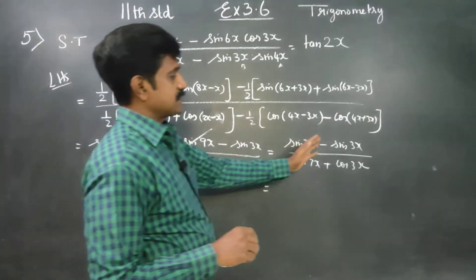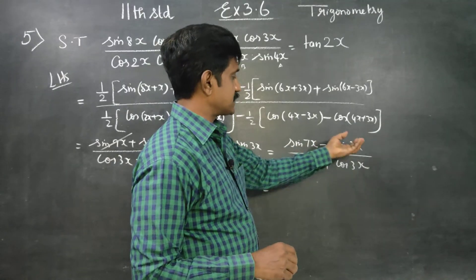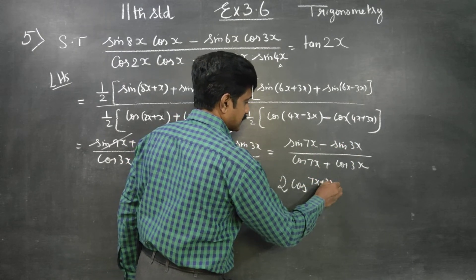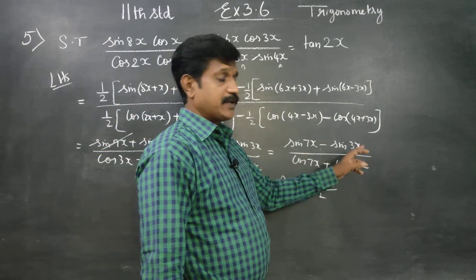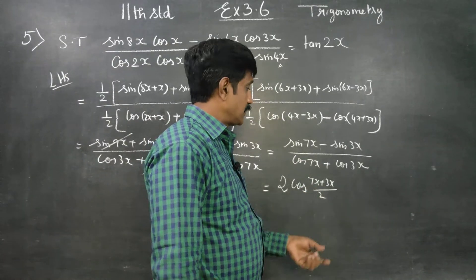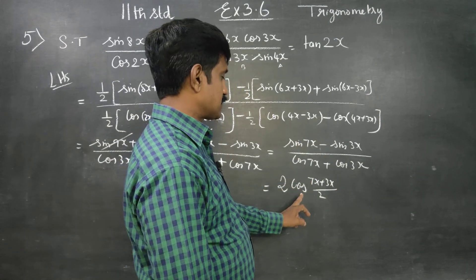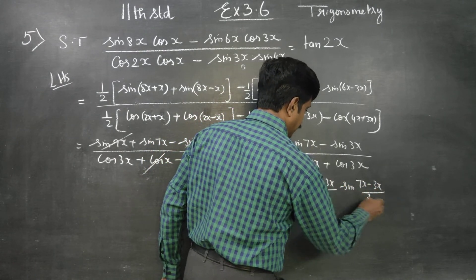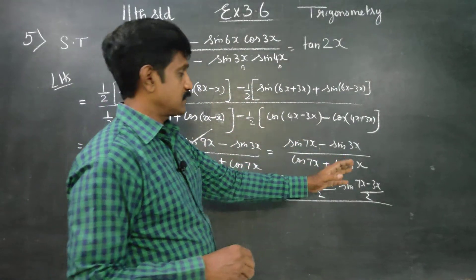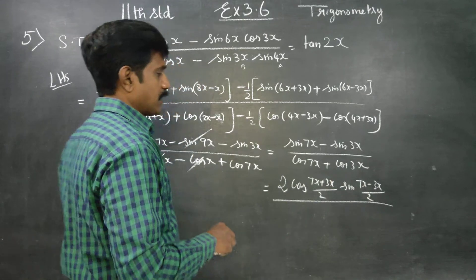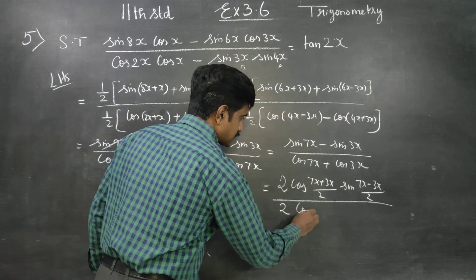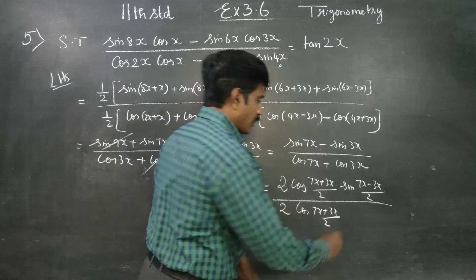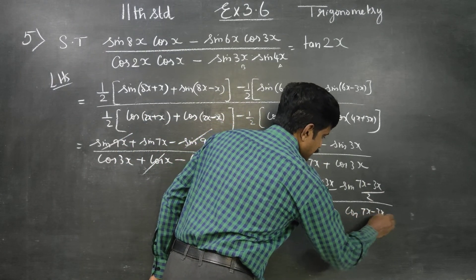What is sin C minus sin D? Sin C minus sin D equals 2 cos((C+D)/2) times sin((C-D)/2). For 7x plus 3x by 2 — applying the summation to product formula: sin C minus sin D is 2 cos((C+D)/2) times sin((C-D)/2). For cos plus cos: cos C plus cos D is 2 cos((C+D)/2) times cos((C-D)/2). So cos 7x plus 3x by 2 and again cos((C-D)/2).